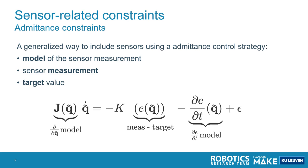If we map this to the task function, we see that the Jacobian corresponds to the partial derivatives of the model, while the value of the task function corresponds to the difference between the measurement and the target — the error between them. The feed-forward is also derived from the partial derivatives of the model. So from the model, we only use its partial derivatives; we never use the value of the model itself.